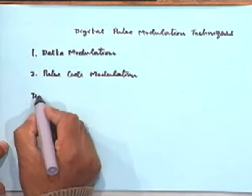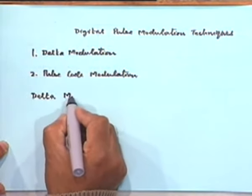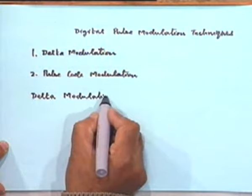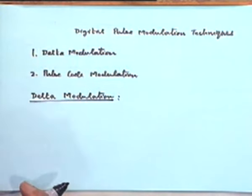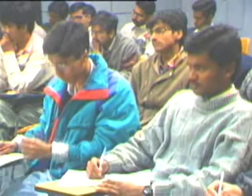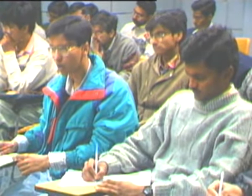Let us start by discussing delta modulation. It is a very simple technique to encode a message signal into a binary two-valued signal, where each pulse sample takes only one of two possible polarities — positive or negative. For the sake of discussion, I will assume that the pulses we are talking about are ideal impulses, just for simplicity of bringing out the concepts.